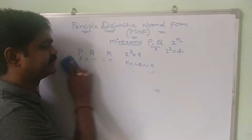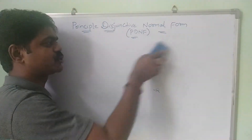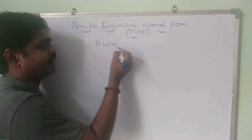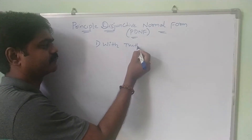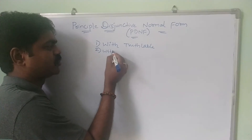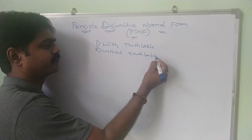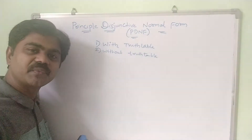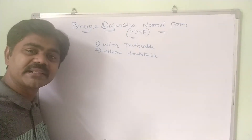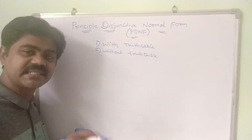To solve PDNF, there are two methods. The first method is with a truth table, and the second method is without a truth table. We will first see the rules for solving using the truth table method.